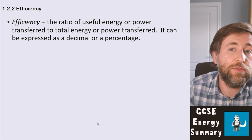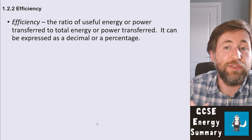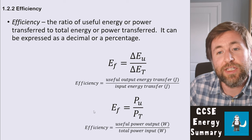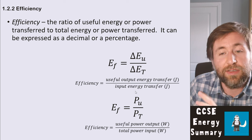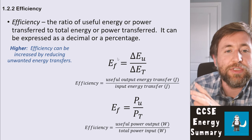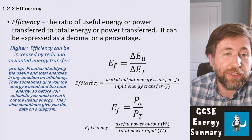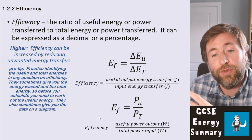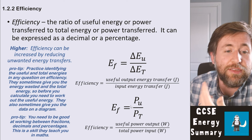Efficiency is defined as the ratio of useful energy (or power) transferred to total energy (or power) transferred — what percentage of energy supplied is transferred usefully. It can be expressed as a decimal or a percentage. There are two forms of the equation: one using useful output energy and total energy, another using useful power output and total power. To increase efficiency, reduce the waste — reduce unwanted energy transfers. Practice identifying useful versus total energy, as questions may give you wasted energy and total energy, requiring you to calculate useful energy first.